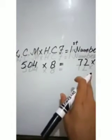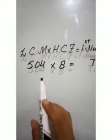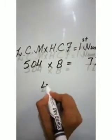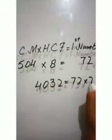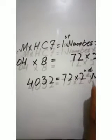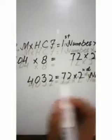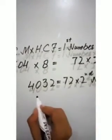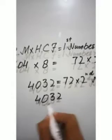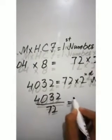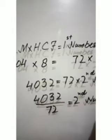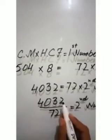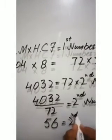504 × 8 = 4032. So 4032 = 72 × second number. Now we divide 4032 by 72 to find the second number. Dividing gives us 56. So the second number is 56. This is the answer.